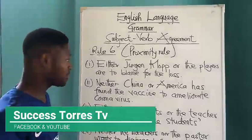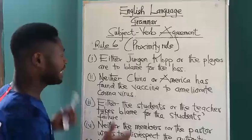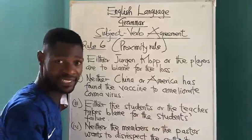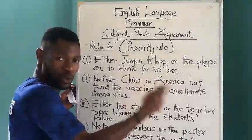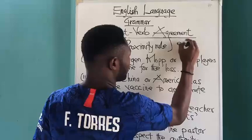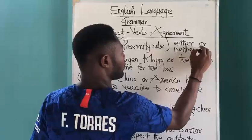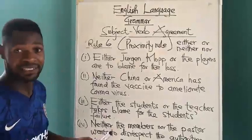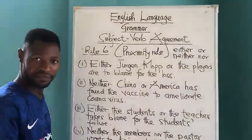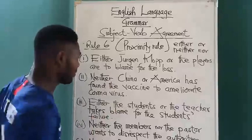Now we'll be looking at the proximity rule, which has to do with subject-verb agreement. Here we are talking about proximity — meaning closeness or nearness. With respect to this rule, we are talking about the subject that is closer to the verb. When you say 'either...or' or 'neither...nor', you are going to mention more than one subject or entity. Therefore, which of the subjects is going to agree with the verb? One has to agree with the verb — the one that is closer to the verb.